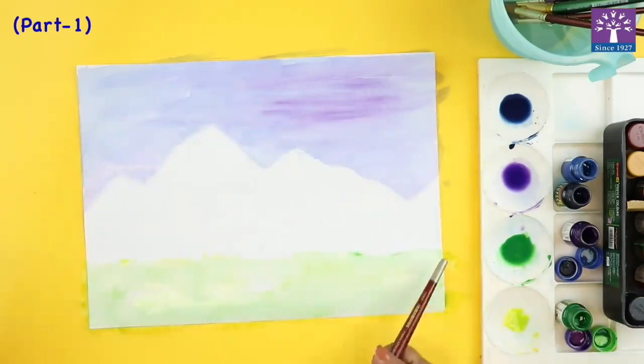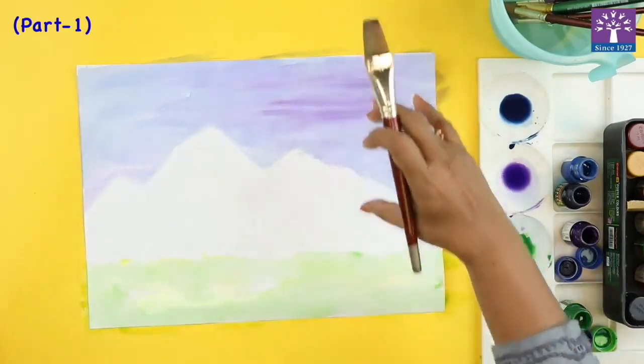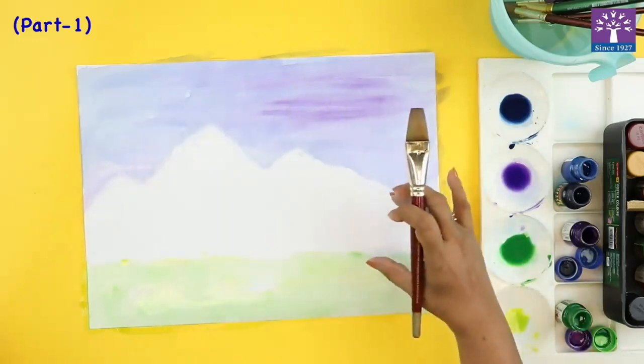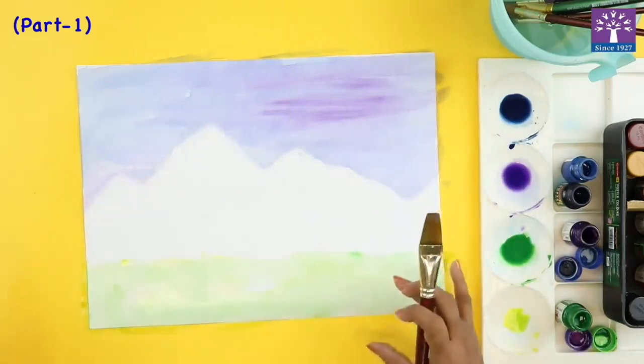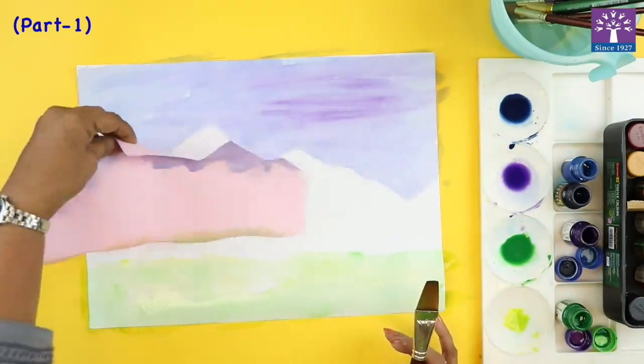There, see I'm getting this uneven line. I have got two parts: this is the sky, this white part is my mountain, and this is my land. This is the stencil that I have used.